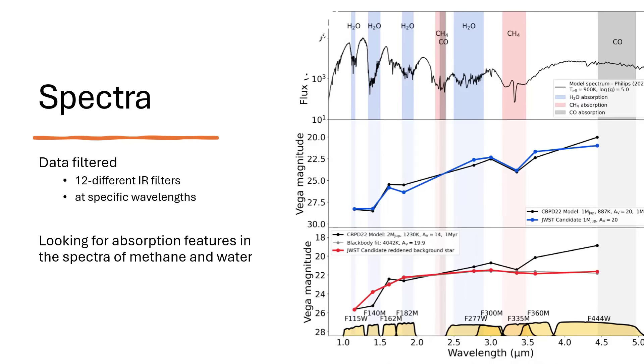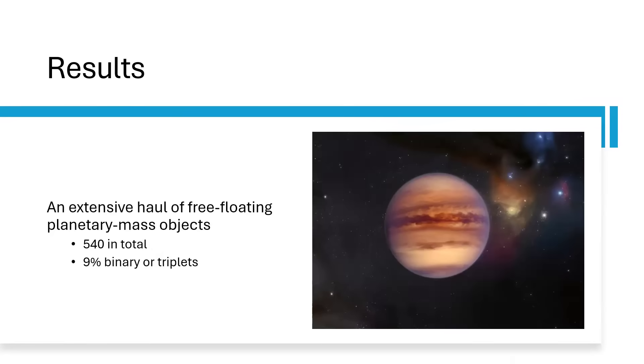The idea was to look for these free floating planets by trying to detect these molecules in the atmospheres, looking at regions where we could spot an excess of these molecular signatures. They found 540 of them which is quite a big haul for a fairly modest region within the core of the Orion nebula.